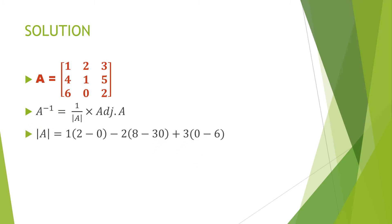For this determinant, I will work with the first row, using elements 1, 2, 3 for my multiplication. I pick the first element, which is 1. Every element related to it on the same row and the same column is closed off, and I work with the remaining elements: 1, 5, 0, 2. So 1 times 2 is 2, minus 0 times 5, which is 0. We are through with the first element.